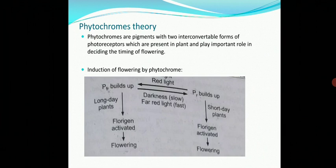Chemically, phytochrome consists of a bilin chromophore consisting of an open chain of four pyrrole rings covalently bonded to the protein moiety via a highly conserved cysteine amino acid. It is the chromophore that absorbs light and changes its state as phytochrome red or phytochrome far-red in interconvertible form.